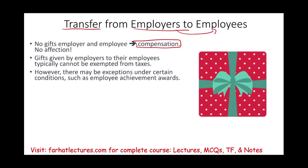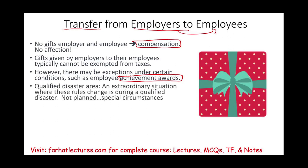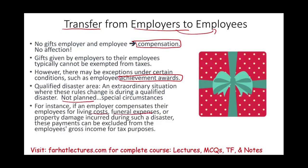There are certain exceptions under specific conditions. If there is an achievement award under certain circumstances, that might be excluded. Also, if you experience a disaster in a qualified disaster area — such as a hurricane or earthquake — the rules change. The employer was not planning to give you anything; when the disaster happened, they're trying to help you out. So if an employer compensates employees for living costs, funeral expenses, or property damage incurred during a disaster, that payment may be excluded from the employee's gross wages.